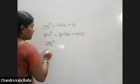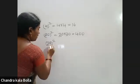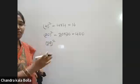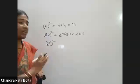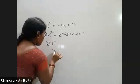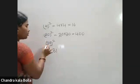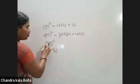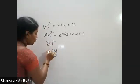9 squared value is 81. Next, 2 squared value is 4.